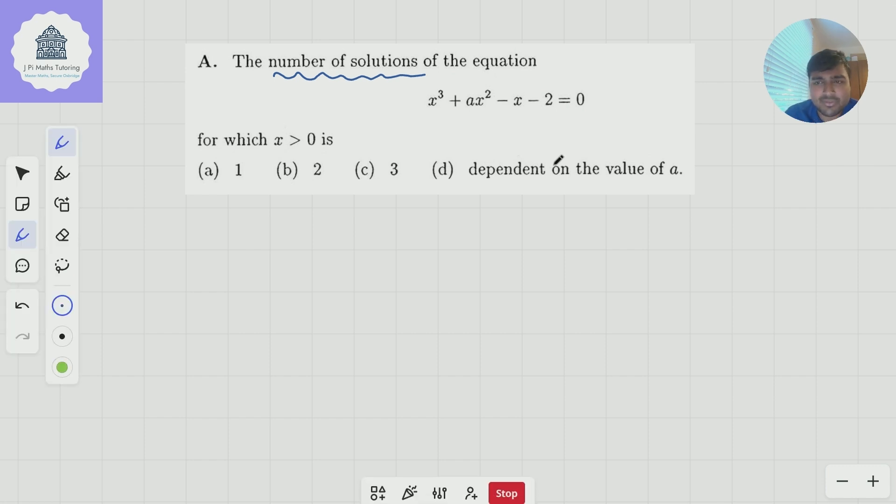Now, here it's kind of difficult because we've got this a term here, which could be any number, positive, negative, 0, whatever. So maybe we can just draw it without. So what if we just move this guy to the other side? And we have x³ - x - 2 = -ax², or minus ax² even.